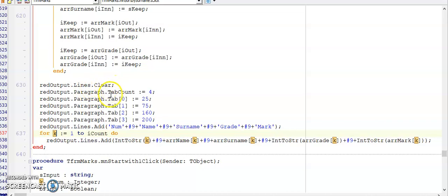So I'm clearing the rich edit. I have another column, so I'll need another tab stop. I'm setting up my tab stops and my headings. And here I'm displaying the arrays in the positions K, and that will produce for me the output of sorting these arrays according to the surname.